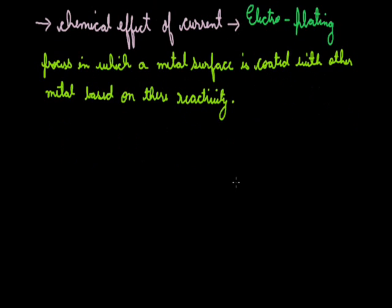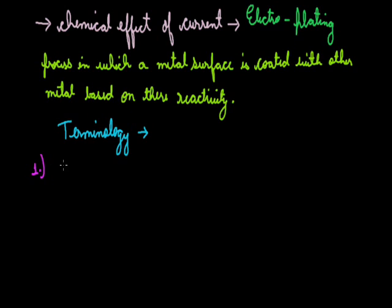Electroplating is a process of coating a metal surface. There are various terminologies related to this process. Our first term is cathode and anode, which we know from chemistry. Cathode is the electrode which is connected to the negative terminal, while the electrode which is connected to the positive terminal is known as anode.